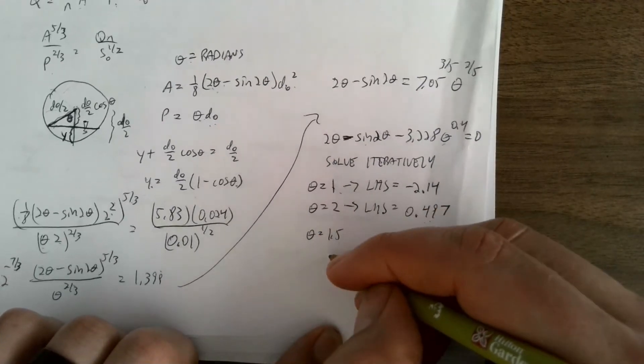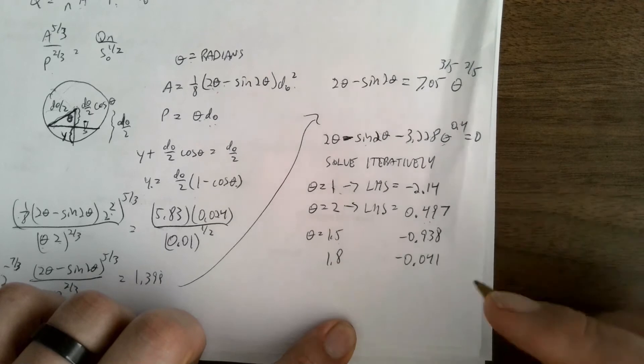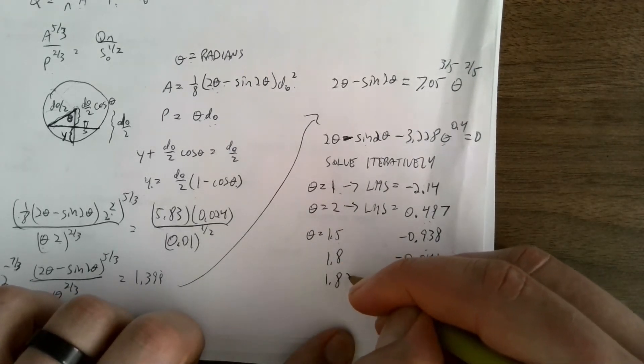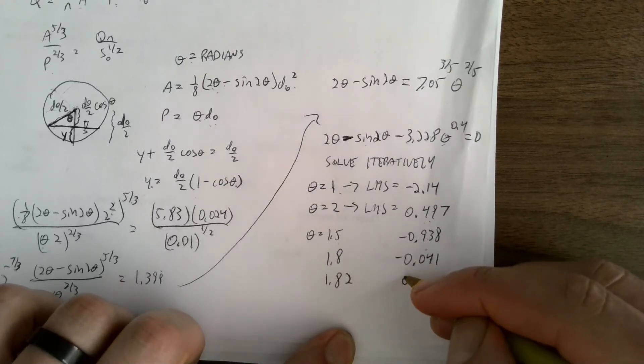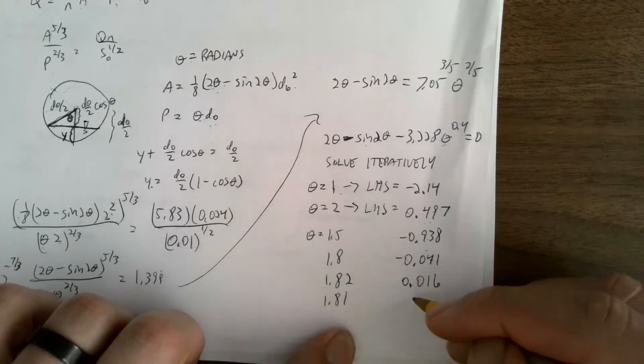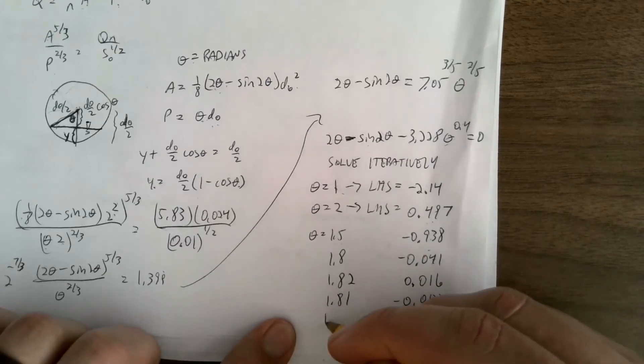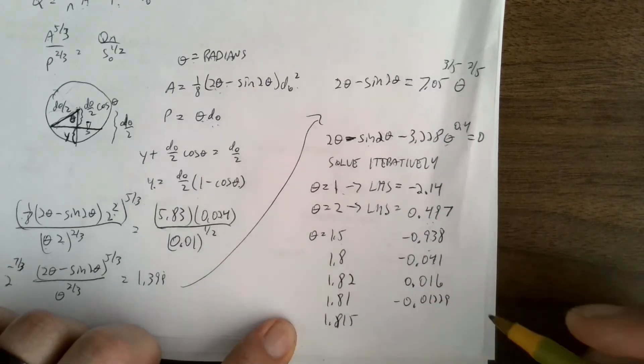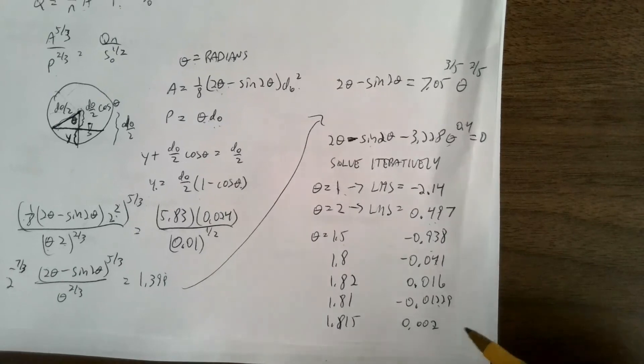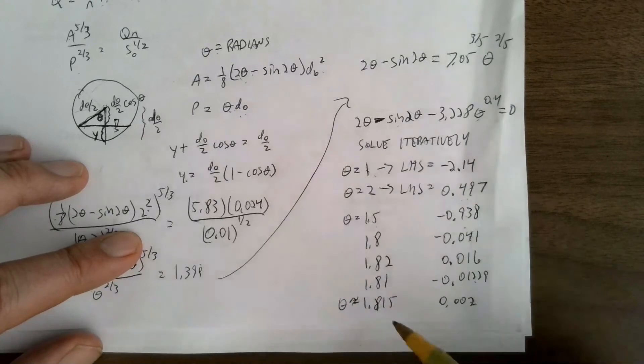It looks like I need to get closer to two because I still haven't crossed over. So the next place I might go to guess might be around like 1.8. And if I do that, I get negative 0.041. So I'm getting close, but I still haven't gotten there. 1.82 gives me 0.016. 1.81 gives me negative 0.01229. And 1.815 gives me 0.002. So I mean, that's getting to be close enough there. So theta is approximately equal to 1.815.